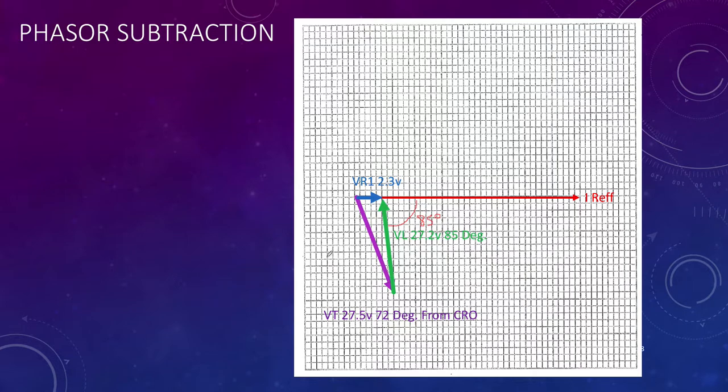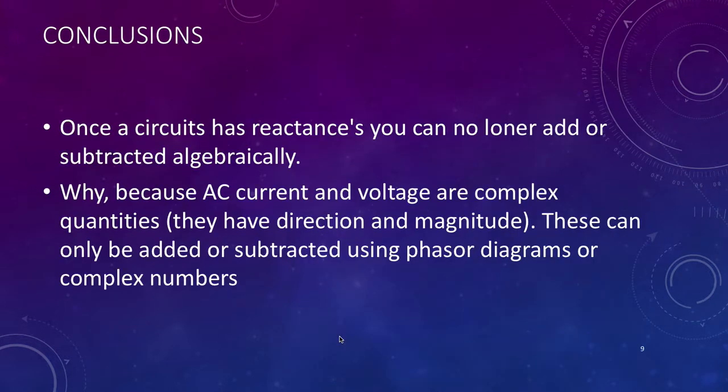So what can we conclude? Once a circuit has reactances of some kind in it, you can no longer add or subtract algebraically. Why? Because AC current and voltages are complex quantities. They have both direction and magnitude, and both things must be considered when you're adding or subtracting them. And these can only be added or subtracted using phasor diagrams or using complex numbers, and we're going to stick with using phasor diagrams for this particular course.